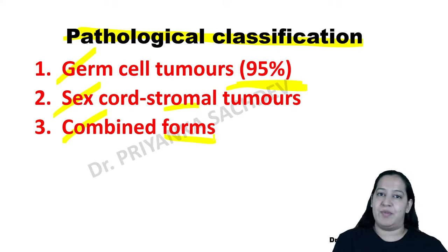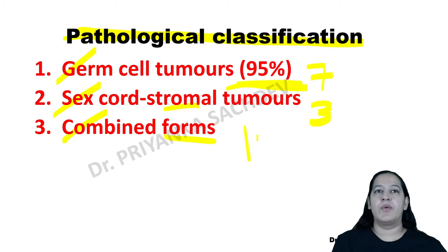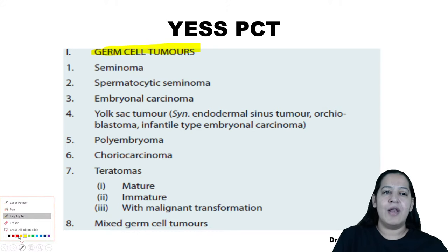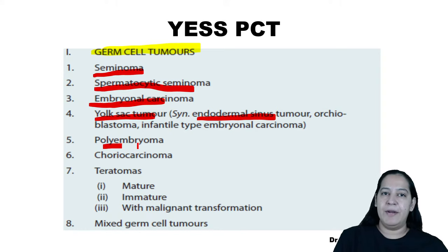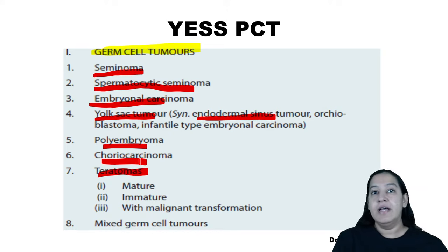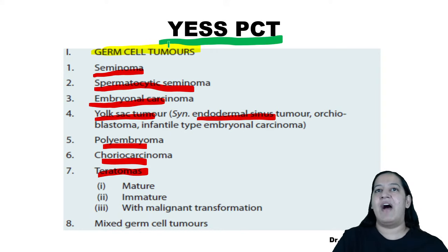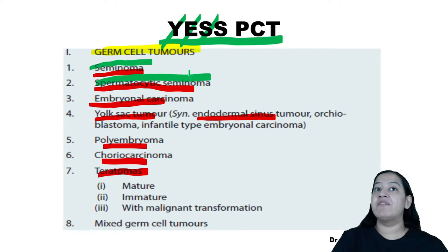Germ cell tumors are of seven types. The mnemonic is YESSPCT: Y for Yolk sac tumor, E for Embryonal carcinoma, first S for Seminoma (classical), second S for Spermatocytic seminoma, P for Polyembryoma, C for Choriocarcinoma, T for Teratoma. Sex cord stromal tumors are three types — mnemonic LSG: L for Leydig cell tumor, S for Sertoli cell tumor (also known as androblastoma), G for Granulosa cell tumor.